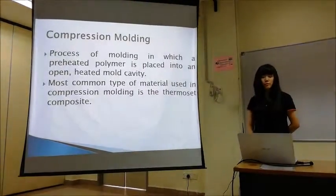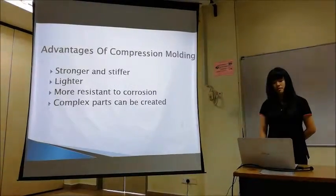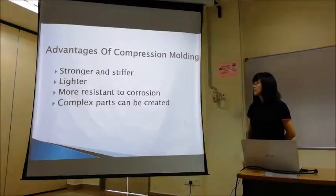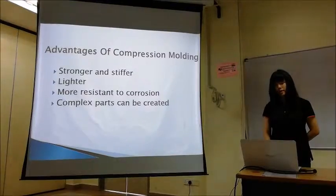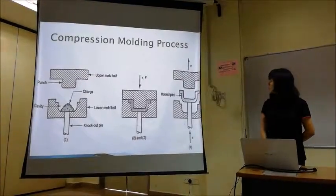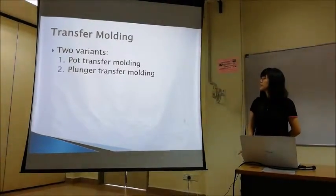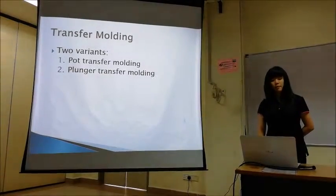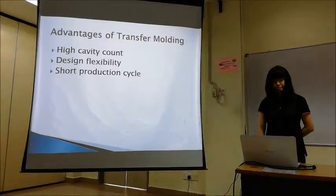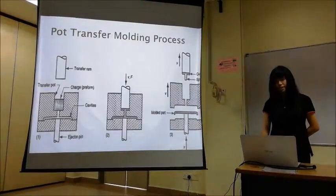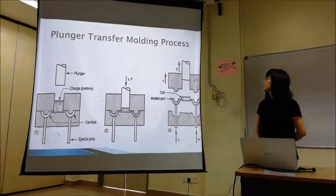There is also another injection molding process involving thermosets, called compression molding. The advantages of compression molding are that products are stronger and stiffer, they are lighter, more resistant to corrosion, and complex parts can be created. This is the illustration of the compression molding process. The next one is the transfer molding process. In transfer molding, there are two types of variations: pot transfer molding and plunger transfer molding. These are the illustrations of the pot transfer and plunger transfer molding processes.